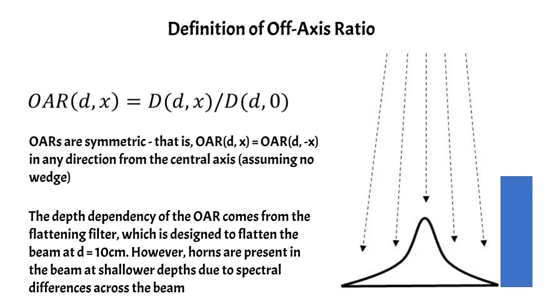And that's where the depth dependence comes from, and also where the beam horns come from. So we're going to look at some profiles in a little bit, but it's important to note that you need to account for the spectral differences across the beam because of the flattening filter.